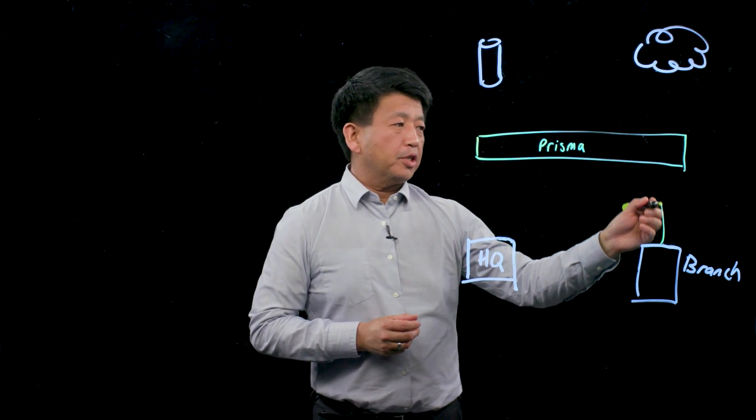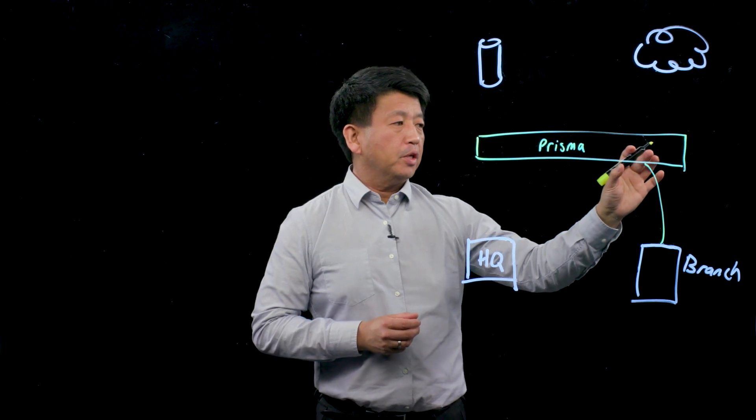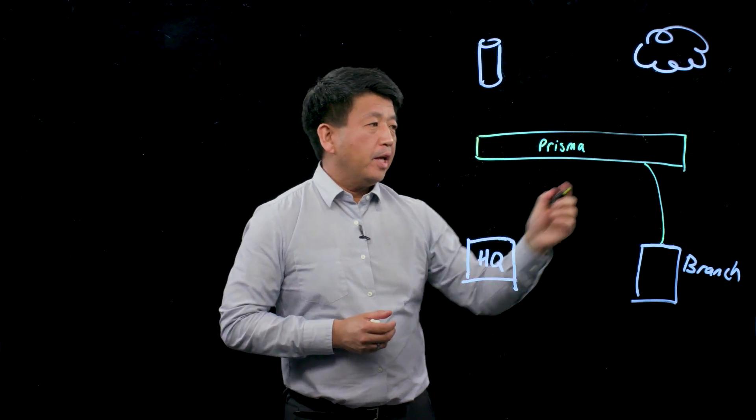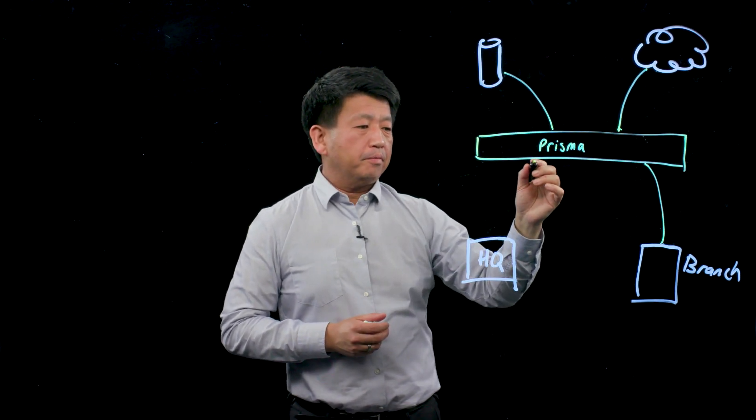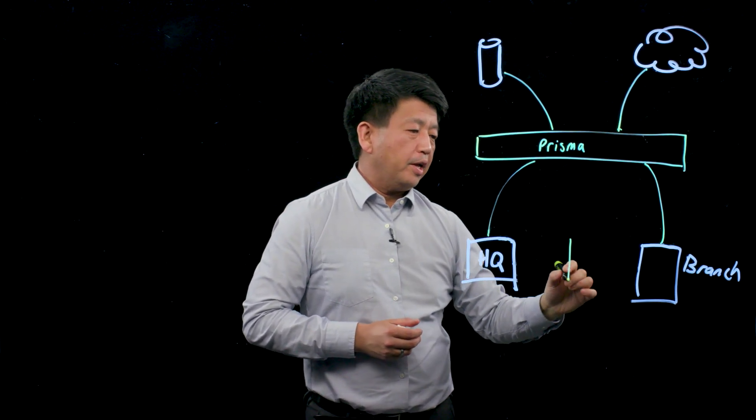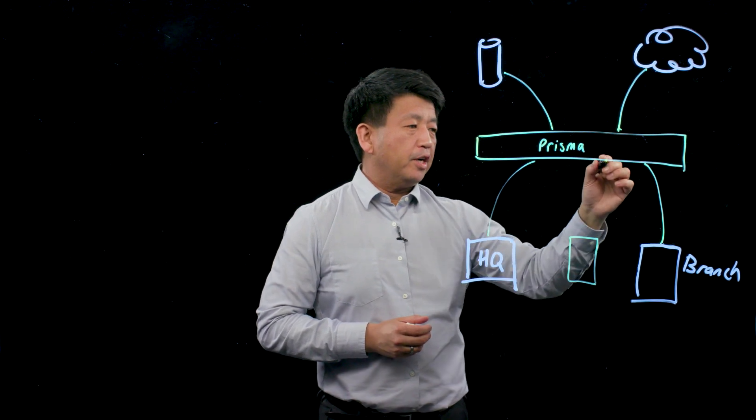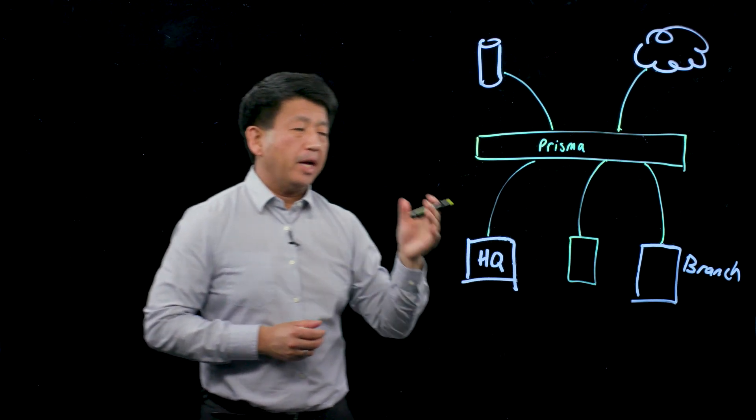Branch offices would connect to a regional location in Prisma and from there they can reach their applications in the cloud, in the data center, as well as headquarters, and even other branch offices that are connected to Prisma as well.